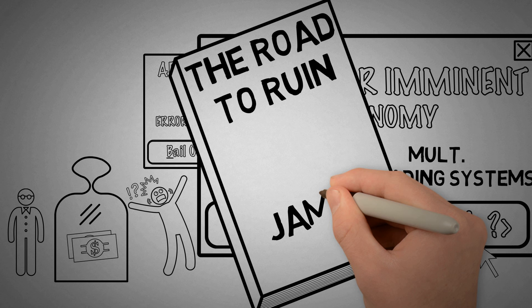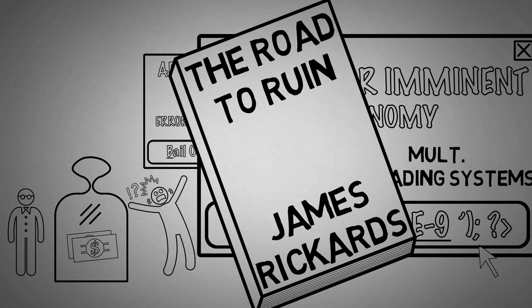That is what Jim Rickards' new book, The Road to Ruin, is about. But before we get to the elites' plan, how can we actually be sure another crisis is coming?